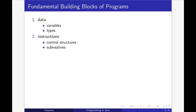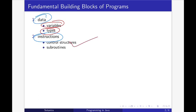There are two basic aspects of programming. One is data, another one is instruction. To work with data, you need to understand variables and types. Similarly, to work with instructions, you need to understand what is control structure and what is subroutine.